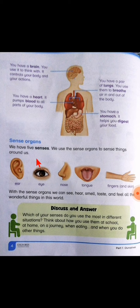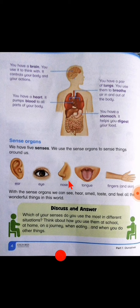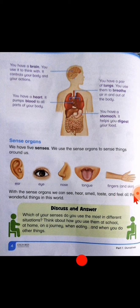Sense organs. We have five senses. We use the sense organs to sense things around us. بیٹا، یہ ہمارے five main senses ہیں۔ Ears سے ہم سنتے ہیں، eyes سے ہم دیکھتے ہیں، nose سے ہم smell کرتے ہیں، tongue سے ہم taste کرتے ہیں، اور ہماری fingers یا arm ہمیں کسی چیز کو touch کرنے میں help کرتا ہے۔ With the sense organs we can see, hear, smell, taste and feel all the wonderful things in this world.